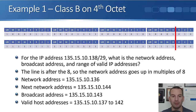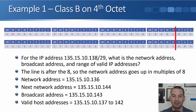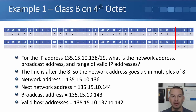The IP address is 135.15.10.138/29. We write out the IP address and the subnet mask, and we put the line in after the slash 29 — the line goes in after the 8. Looking at the bit values, we've got ones under the 128 and the 8, so we add those two together: 128 plus 8 is 136. So the network address must be 135.15.10.136.